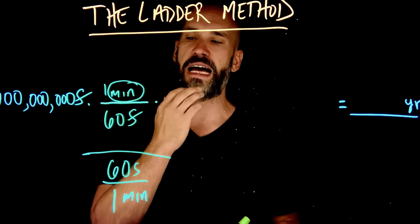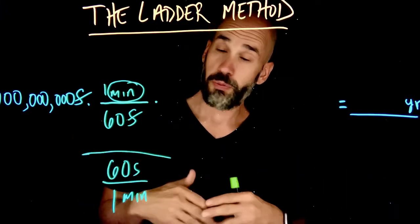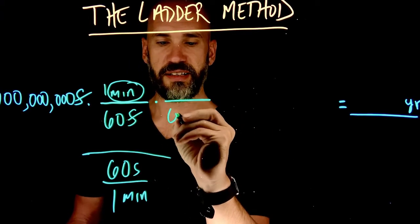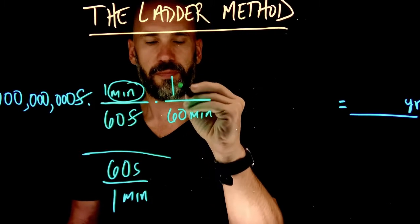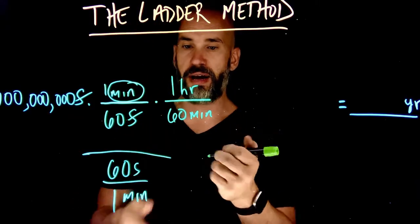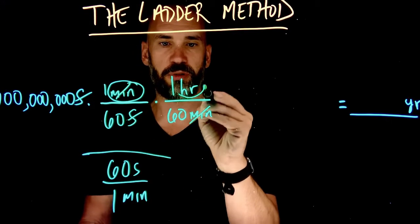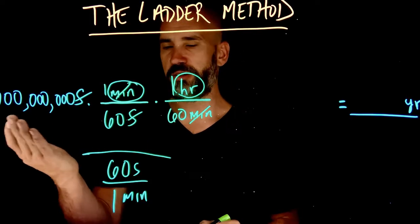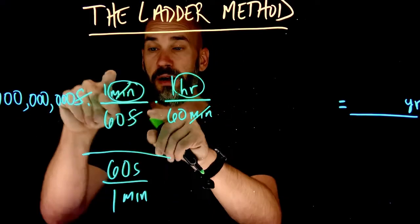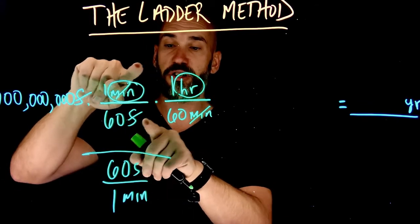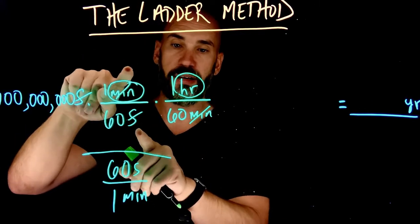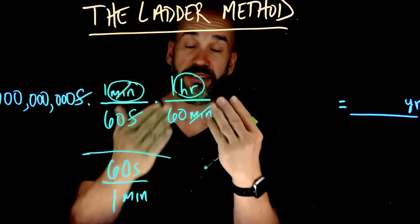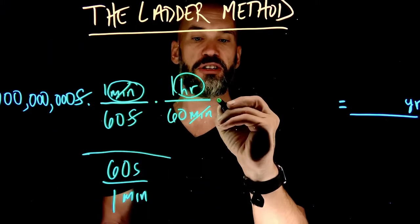What's the next biggest unit of time after minutes that gets us closer to years? Hours. There are 60 minutes in one hour. I put minutes on the bottom because I want minutes to cancel out so I'm left with hours. Some of you might be wondering: aren't you changing the value? The truth is no — one minute and 60 seconds are the same thing, so you're just multiplying by one. That's why we call it a magic one. One hour and 60 minutes is the same thing — the same thing divided by the same thing is just one, so you're not changing anything.